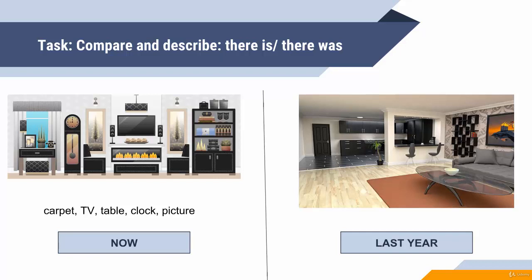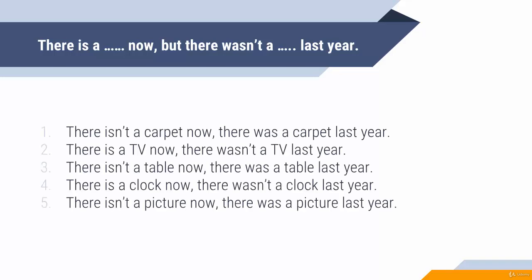In the first exercise, we need to compare the two pictures. There isn't a carpet now — there was a carpet last year. There is a TV now, but there wasn't a TV last year. Of course, your sentences may be a little bit different. If you are not sure if what you wrote is correct, just paste it in the Q&A section and I will take a look.